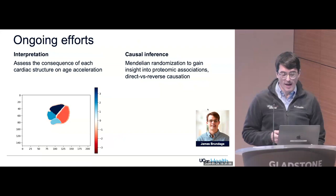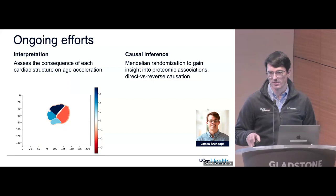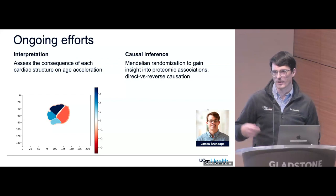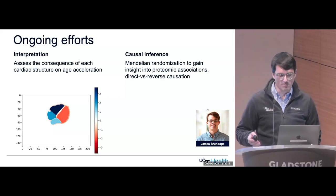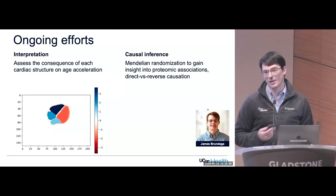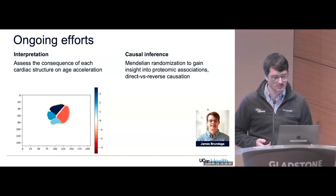We have ongoing work to understand what we're finding. A key unanswered question is whether there are GWAS loci not related to structures we're already measuring. We also want to understand what drives the findings — one simple approach is to delete various chambers or the septum, rerun the analysis, and see how much that changes age acceleration prediction. And certainly causal inference through Mendelian randomization to better understand which things are intervenable.